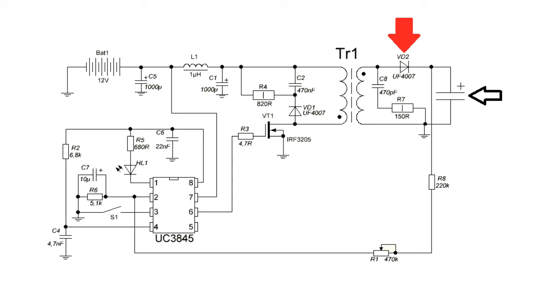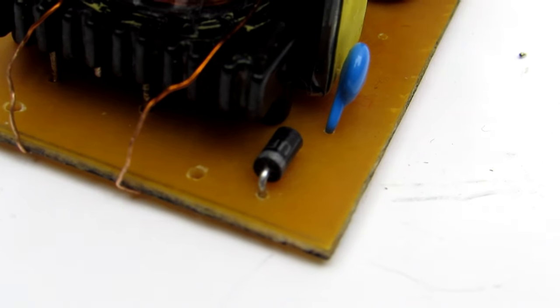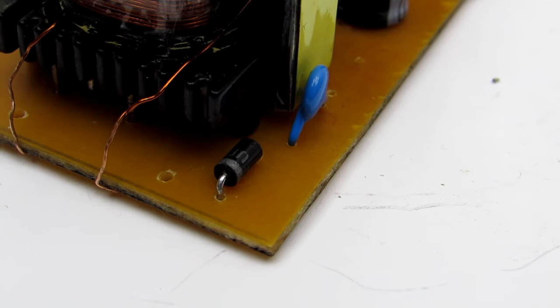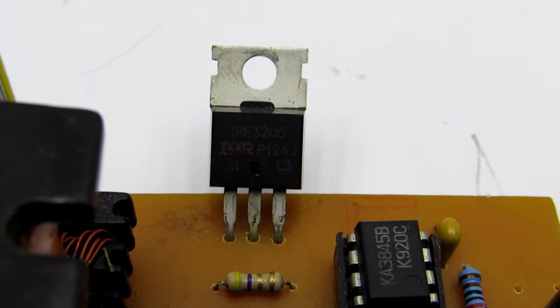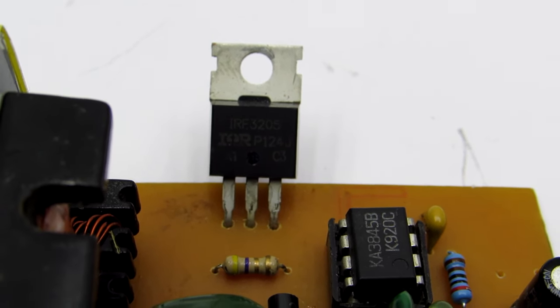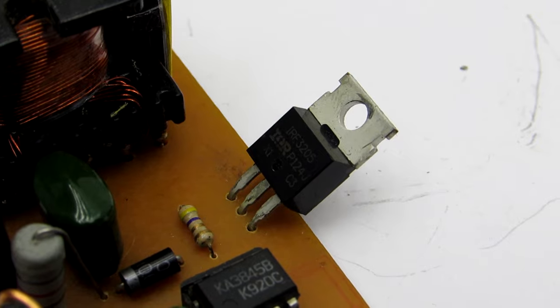A few words about the components. It is necessary to use high-speed type rectifier diode with a reverse voltage of at least 600 volts and a current of at least 1 ampere. Transistor IRF3205 can be replaced by IRFZ44 or other low voltage N-channel FET with a current above 30 amperes.